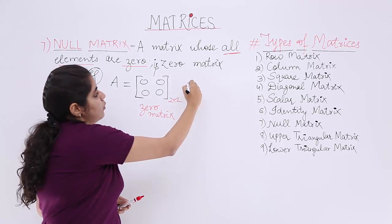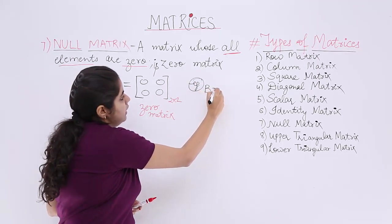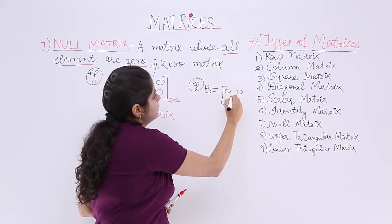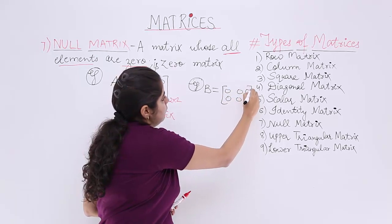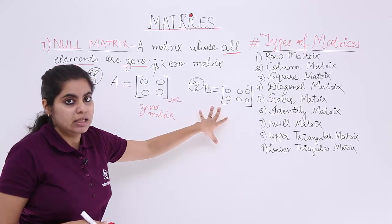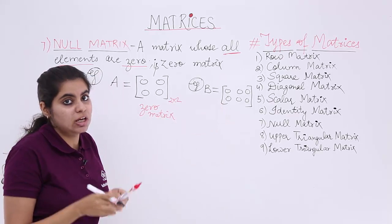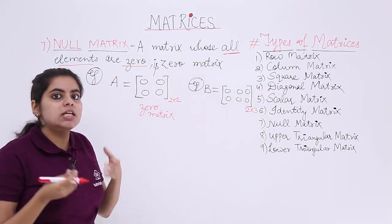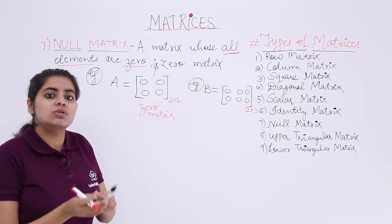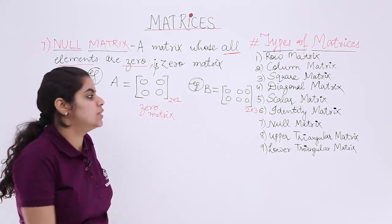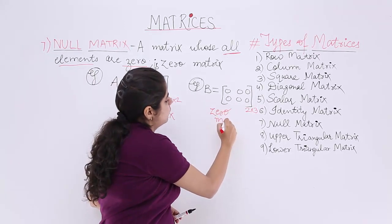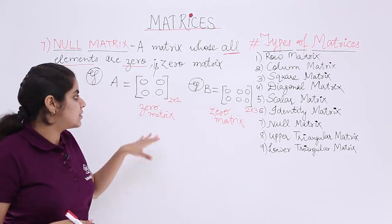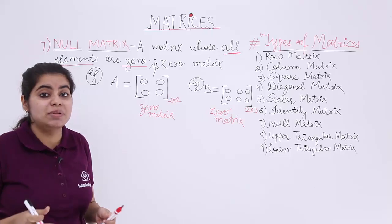Another example: suppose I have a matrix B. Now you see this matrix carefully — it has two rows and three columns. It is a 2 by 3 matrix, and this matrix is also a zero matrix because the only requirement is that all the elements are zero. So yes, this is also an example of a zero matrix. Be it a square matrix or a non-square matrix, it is a zero matrix if all the elements are zero.